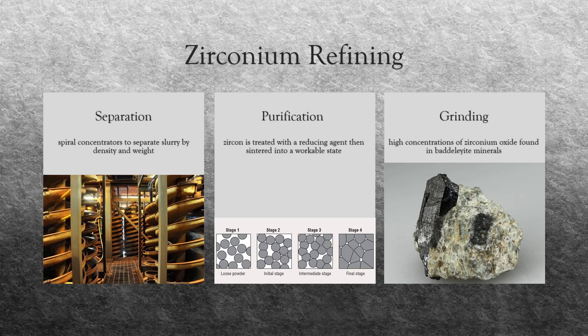For the purifying stage, the zircon is first treated with a reducing agent to free the zirconium from common impurities. Chlorine is typically utilized, and several washes may be necessary to properly purify the samples. The remaining zirconium particles are sintered or heated in a furnace to join loose powders into a more ductile and usable product. This process is utilized for pure zircon ores and results in the creation of pure zirconium.